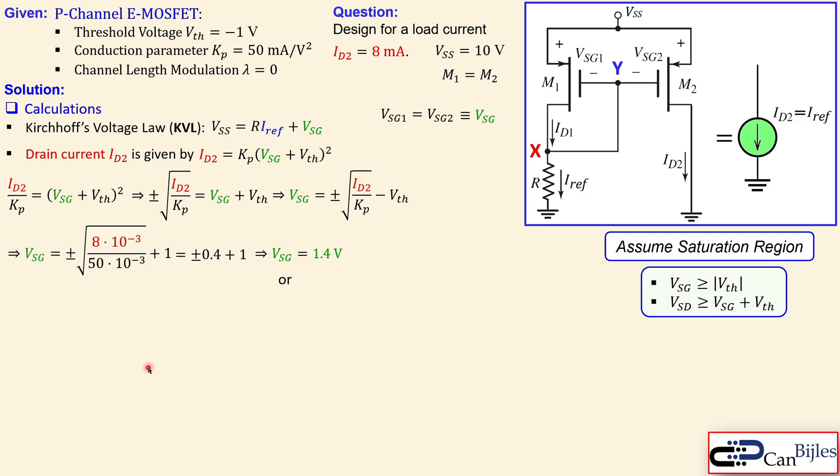1.4 volts is larger than 1 volt, which is the absolute value of the threshold, making it a valid solution according to the saturation region condition. 0.6 volts is smaller than 1 volt, so that is not valid. Mathematically we have two solutions, but only one is valid and available in our circuit. We will use VSG of 1.4 volts.